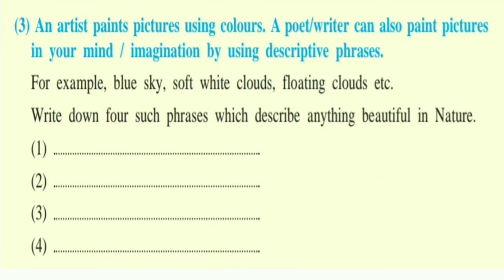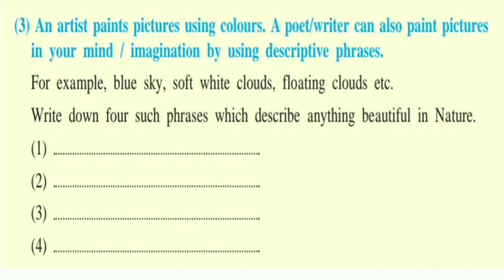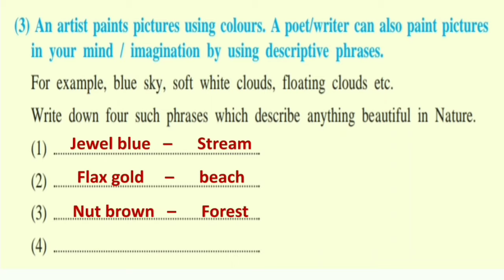Q3. An artist paints pictures using colors. A poet or writer can also paint pictures in your mind or imagination by using descriptive phrases. For example: blue sky, soft white clouds, floating clouds, etc. Write down four such phrases which describe anything beautiful in nature. Answer: 1. Jewel blue stream. 2. Flax gold beach. 3. Nut brown forest. 4. Parsley green fields.